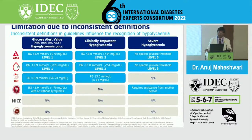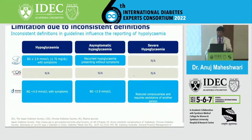IDF says the glucose alert value ranges between 54 to 70 mg/dL, and less than 54 is clinically important, but is silent on severe hypoglycemia. ACE - the American Association of Clinical Endocrinology - says less than 70 is the glucose alert value, remains silent about clinically important hypoglycemia, but defines severe hypoglycemia as requiring assistance from another person. Many organizations including our RSSDI are silent about the definition and cut-off value for hypoglycemia, leading to missed diagnoses.